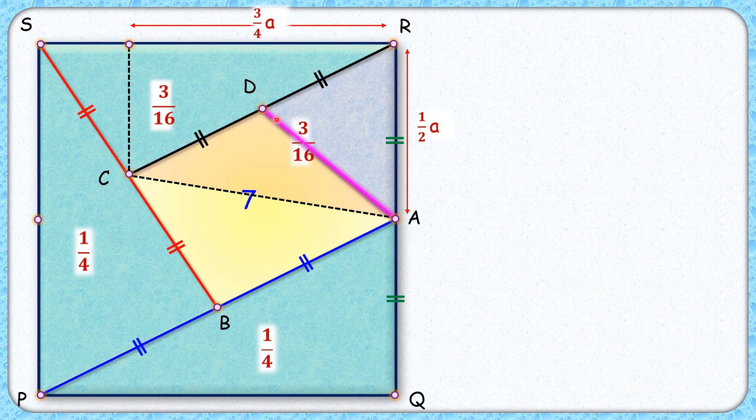Again, AD is the median. It's dividing it into two equal parts. So this area will become 3 by 32nd part of the square.